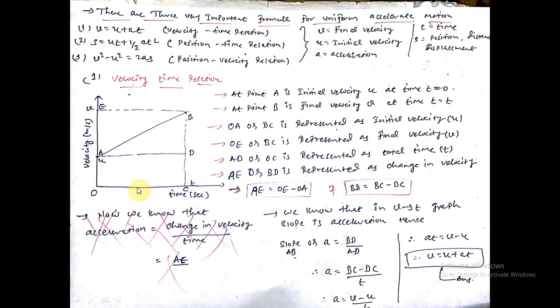Alright, now this whole line OE or CB - both are parallel, both are the same. So OE and this line BC, whether you say this whole line OE or the whole line BC, it is represented as final velocity v. Then say AD or OC. AD or OC is represented as total time t. This is the total time, so say this line or this line, both are the same.